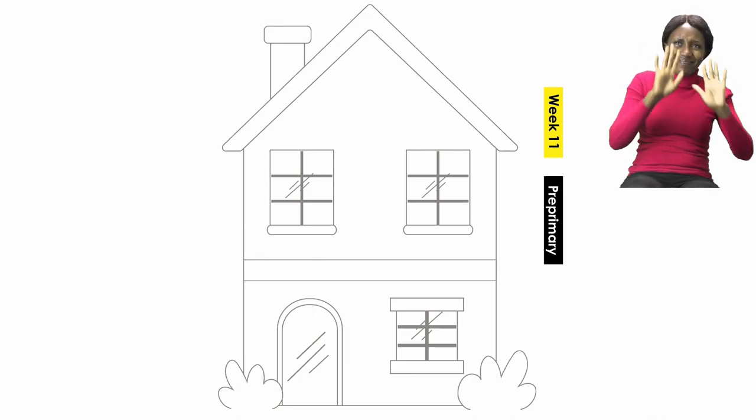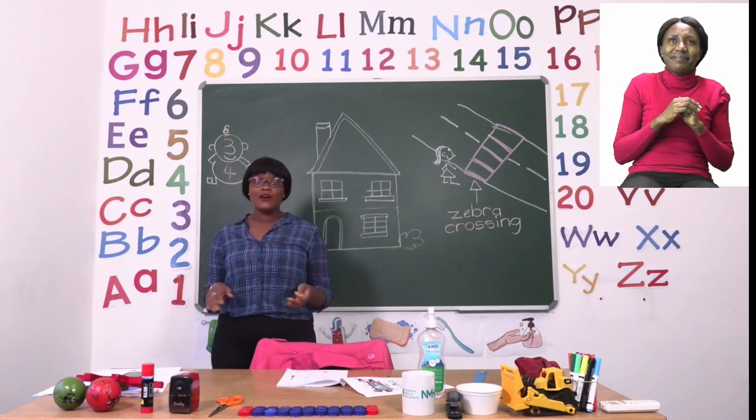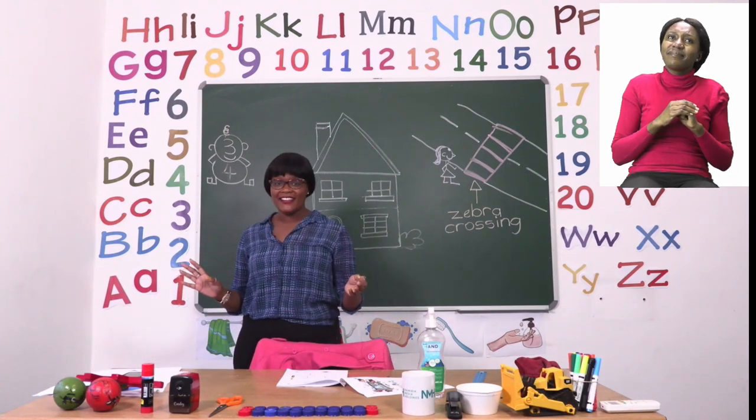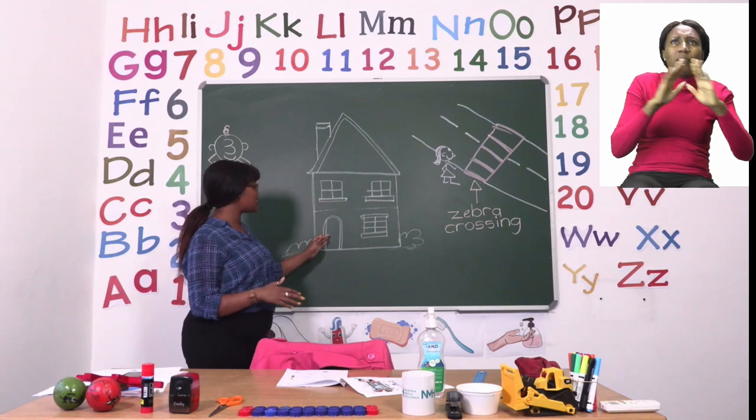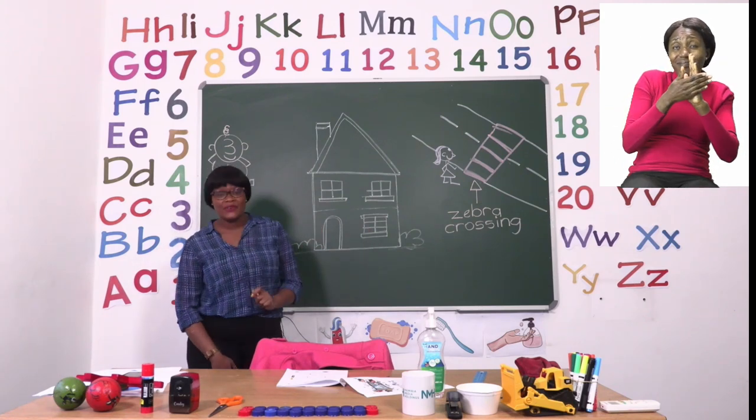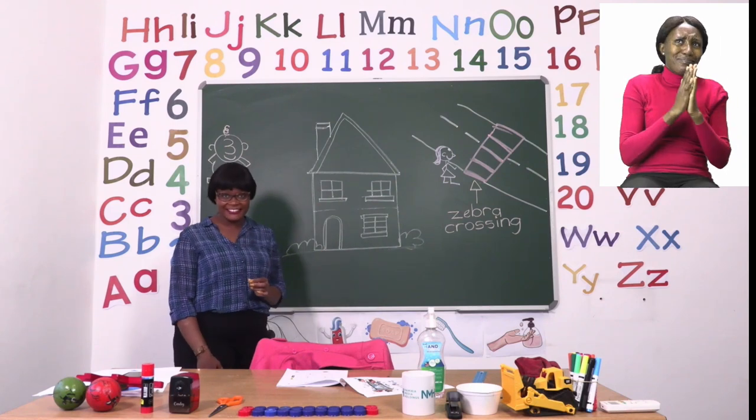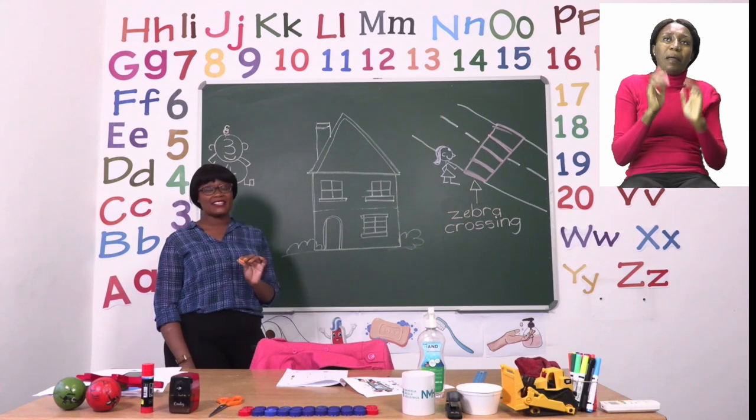And I want us to color the house different colors. So let's take a look at the board. Now just like many houses that we see, a house is not just one color. Sometimes the door is a different color from the windows. So you need to be very careful. Please don't just color color color. No. I'd like you to color them differently.